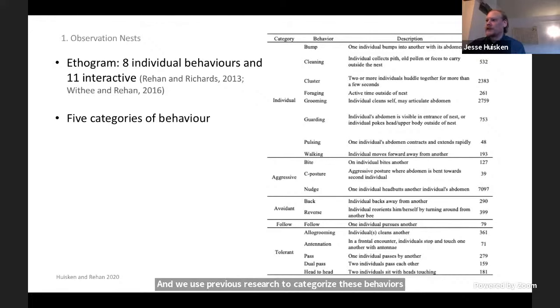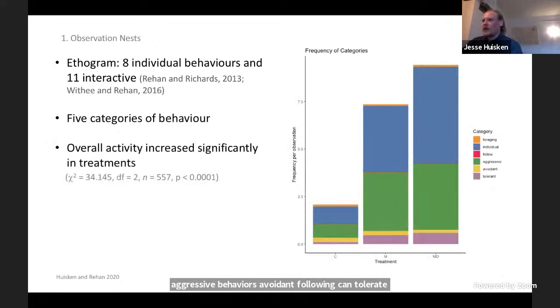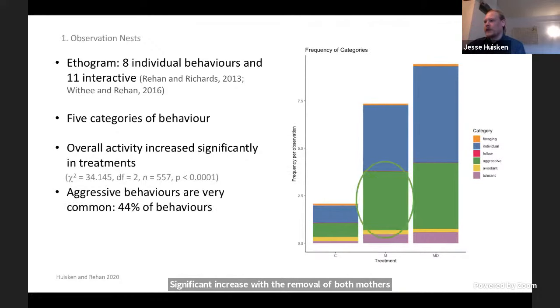Overall, we found that removal treatments drastically increased overall activity within nests. There was a significant increase with the removal of mothers and the removal of mothers and dwarf eldest daughters. We also found that aggressive behaviors are very common within nests—they're highly frequent. Forty-four percent of behaviors were aggressive across all treatments, close to the number of individual behaviors like grooming and nest cleaning.